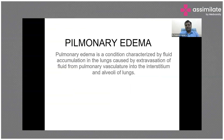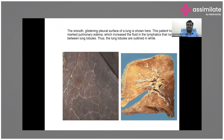Discussing pulmonary edema — what is pulmonary edema? Pulmonary edema is a condition characterized by fluid accumulation in the lungs, caused by extravasation of fluid from the pulmonary vasculature into the interstitium and alveoli of the lungs. What happens is the lungs' alveoli are flooded with fluid. This is a photograph showing the secondary pulmonary lobule, where we can see the septa thickened with fluid and the alveoli flooded with fluid.